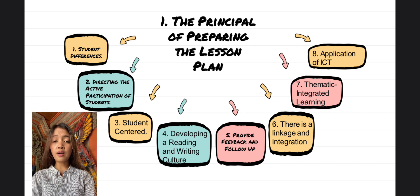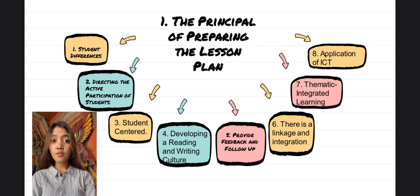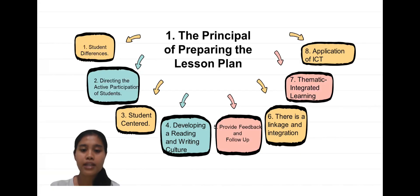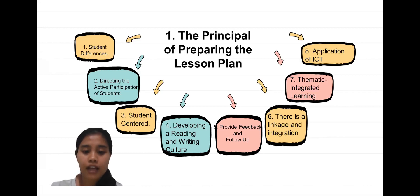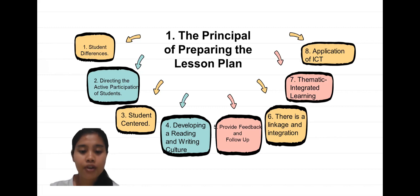The fourth principle is developing reading and writing culture. Learning must be designed in such a way as to make students love reading, comprehend various readings, and express themselves in various forms of writing. The fifth principle is to provide feedback and follow-up. A lesson plan must attend to finding feedback and follow-up including positive feedback, enrichment, and remedial learning.